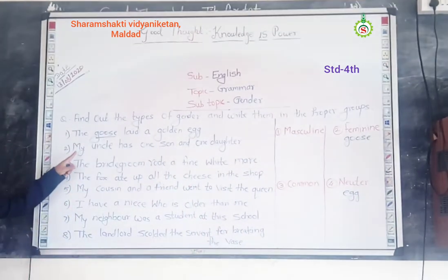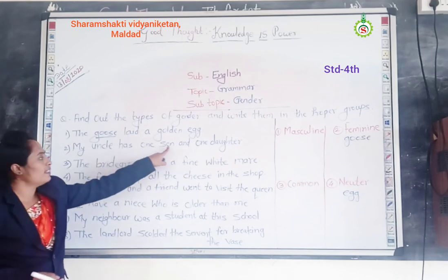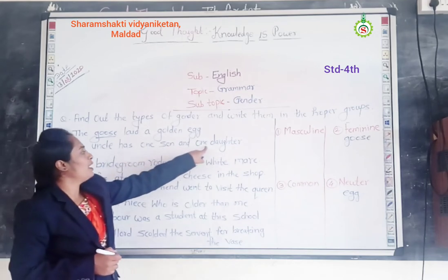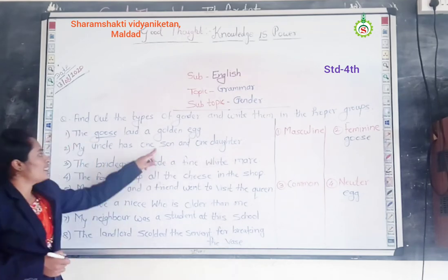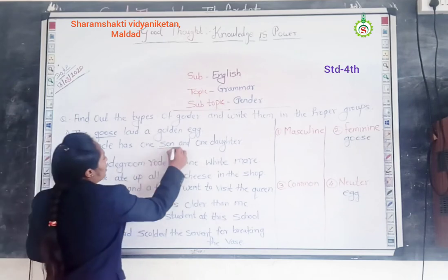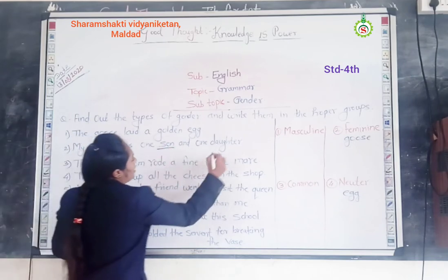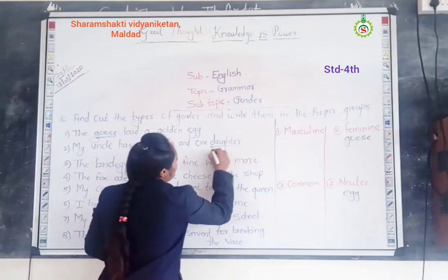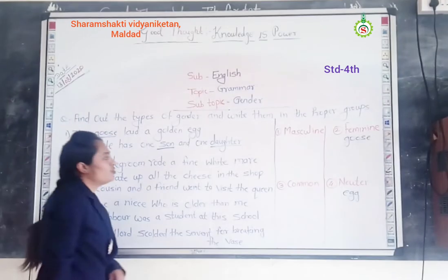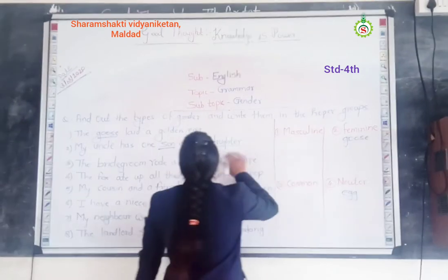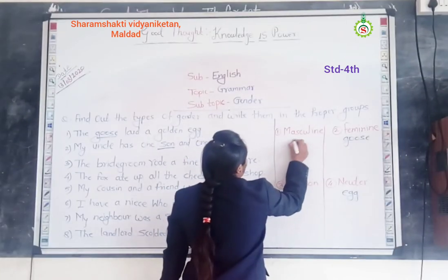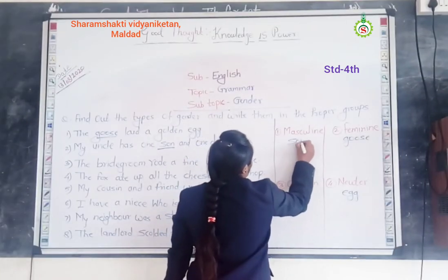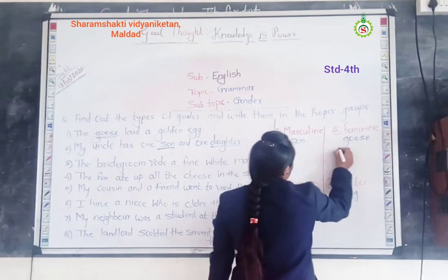Second sentence: My uncle has one son and one daughter. Son is a masculine gender. And daughter is a feminine gender.